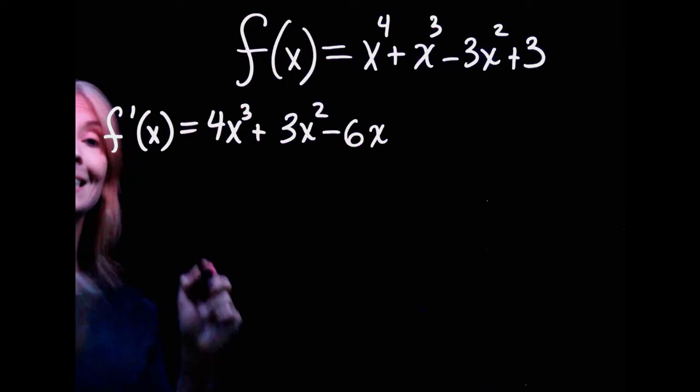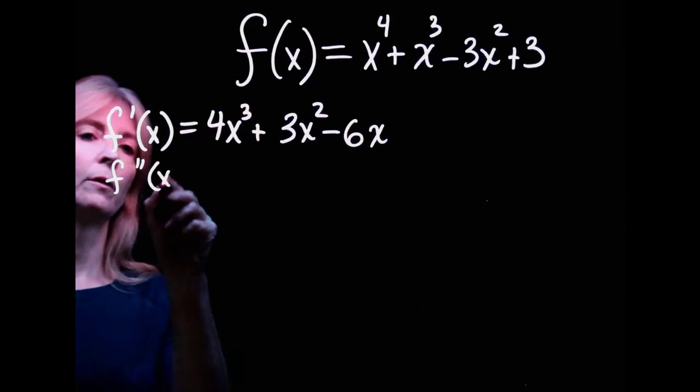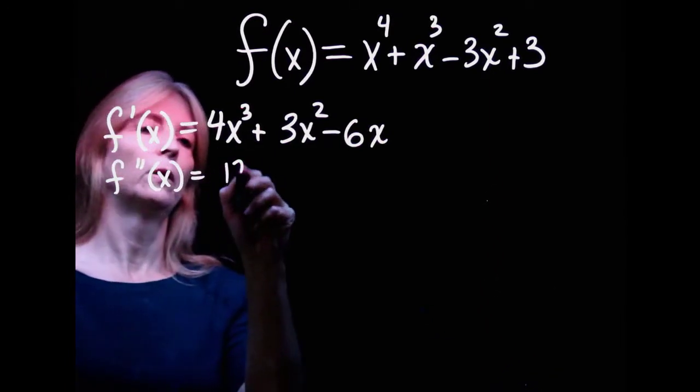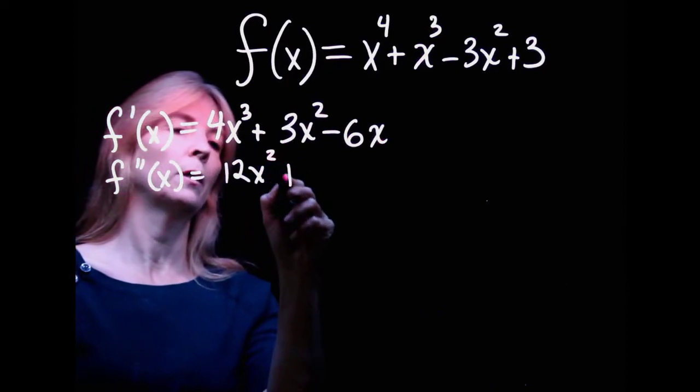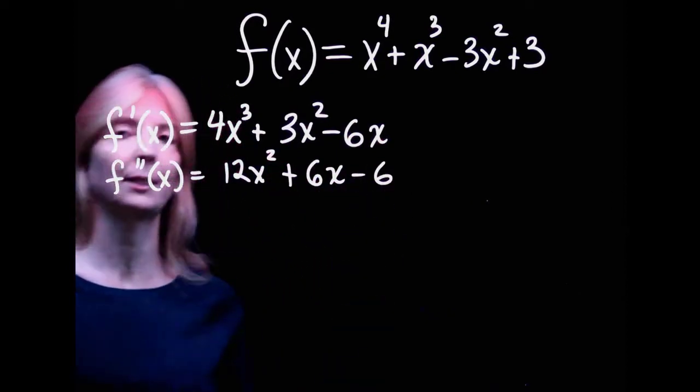But don't forget, we need the second derivative. So the second derivative, 12x squared plus 6x minus 6.